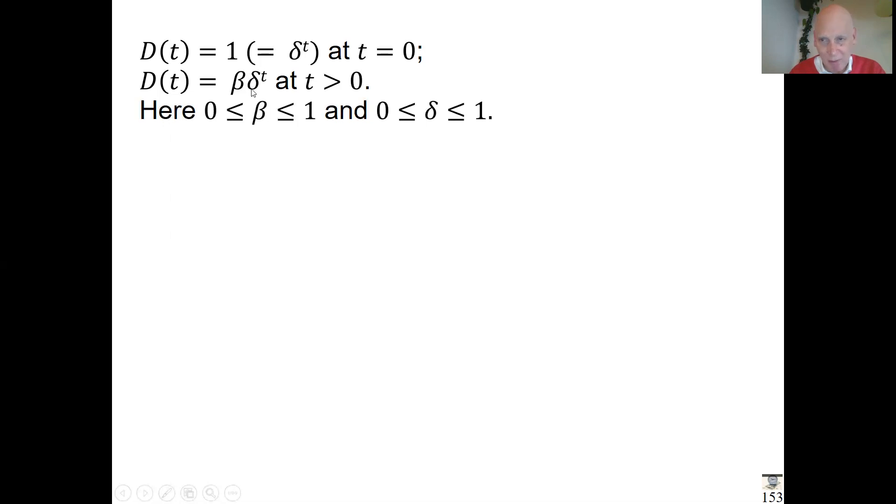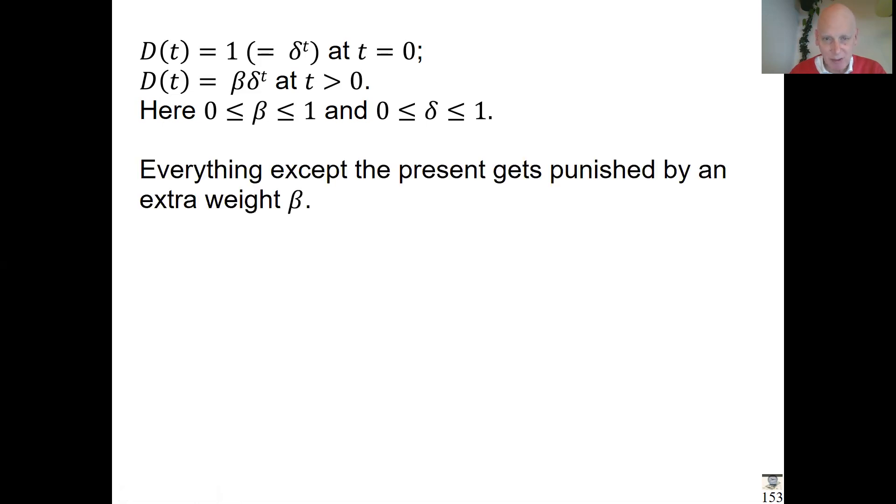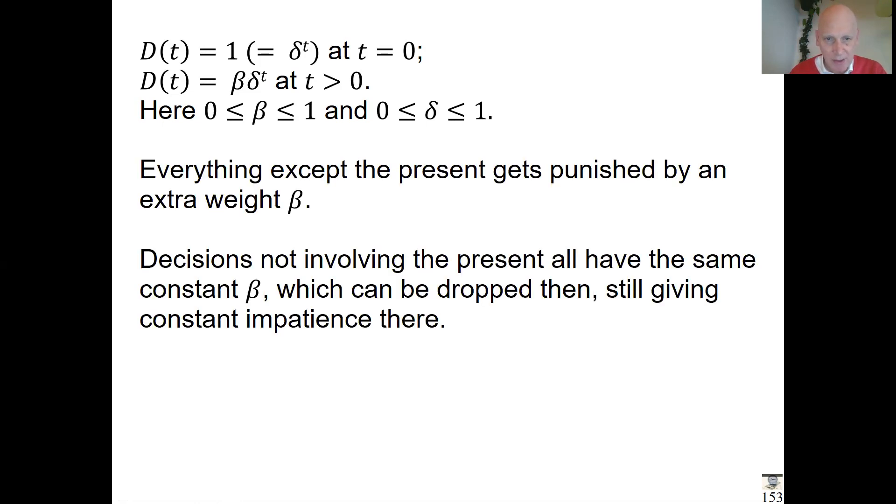But it has an extra beta—it's extra punished by a number beta between zero and one. It's pushed down. So all the future is extra handicapped. That's the idea of this quasi-hyperbolic discounting.